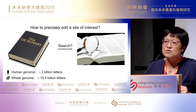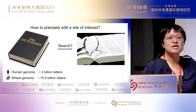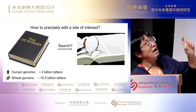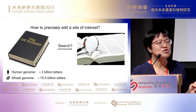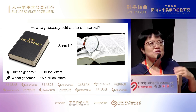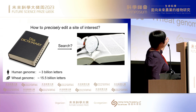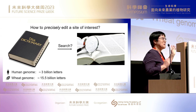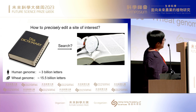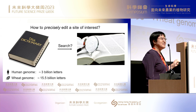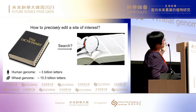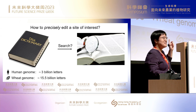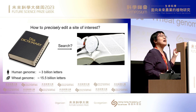The grand question to the field of genome editing is how we can precisely and accurately edit a gene of interest among a vast genome. The human genome is 3 billion bases long, while the wheat genome is 5 times that. It is critical to answer how to precisely find a target site without affecting other locations.